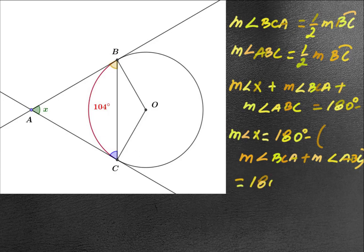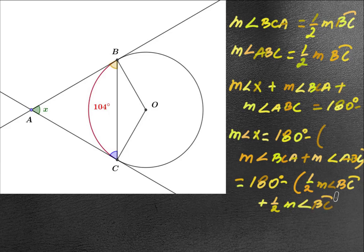So it will be equal to 180 degrees minus half of intercepted arc BC plus half of measure of intercepted arc BC. That means to say that